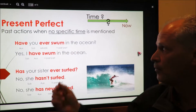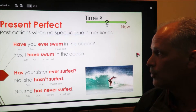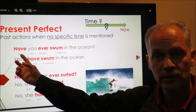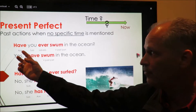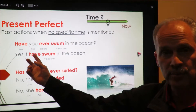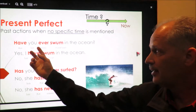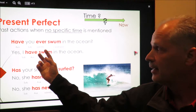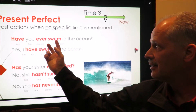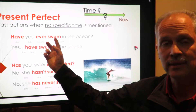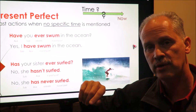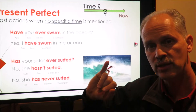The question 'have you ever swum in the ocean' has the auxiliary 'have,' then the subject, then in this case the adverb 'ever,' and importantly, 'swum.' Swum is the past participle.